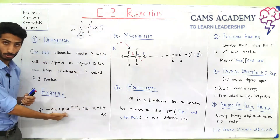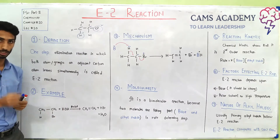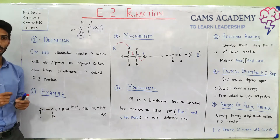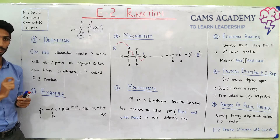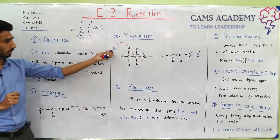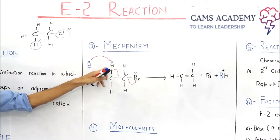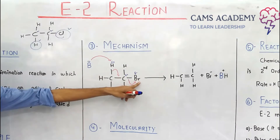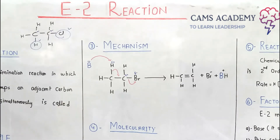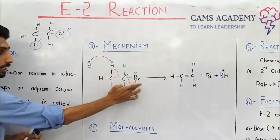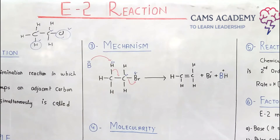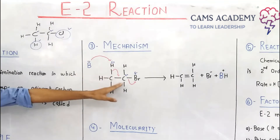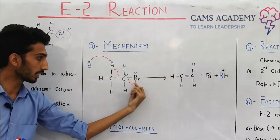When a base acts, it must be very strong. In this case we take a strong base such as KOH. One important thing to remember: in E2 reactions, the base must be very strong. When the base attacks, hydrogen is removed here, electrons shift, and the leaving group (Br) leaves simultaneously.